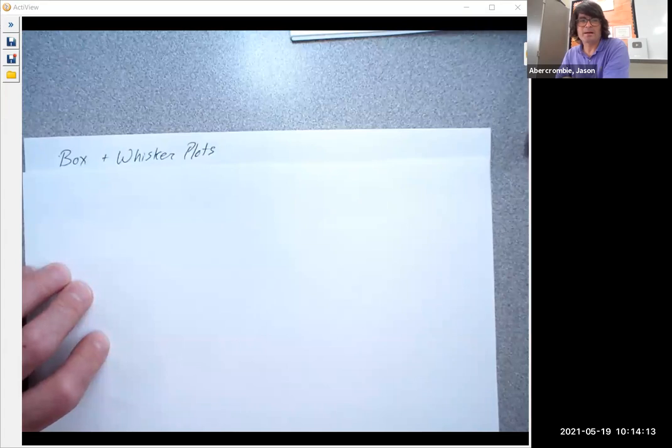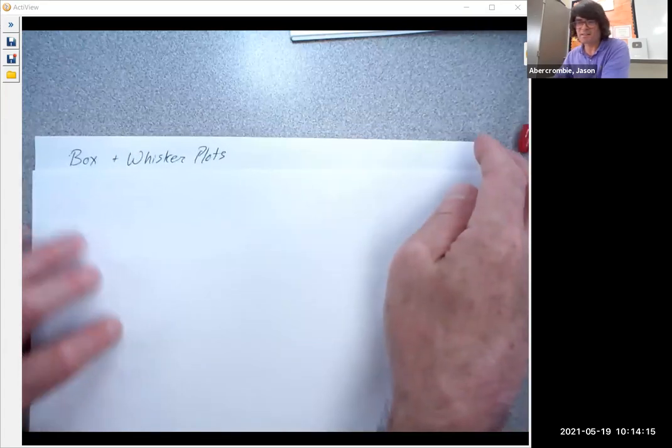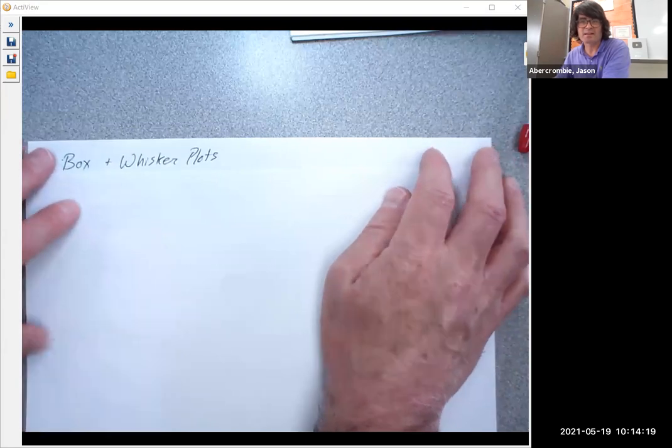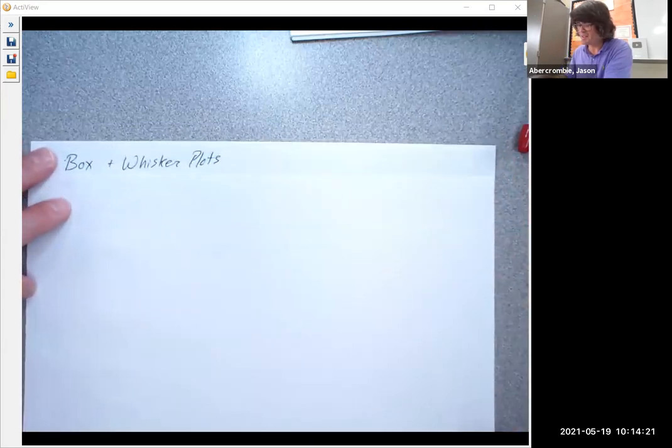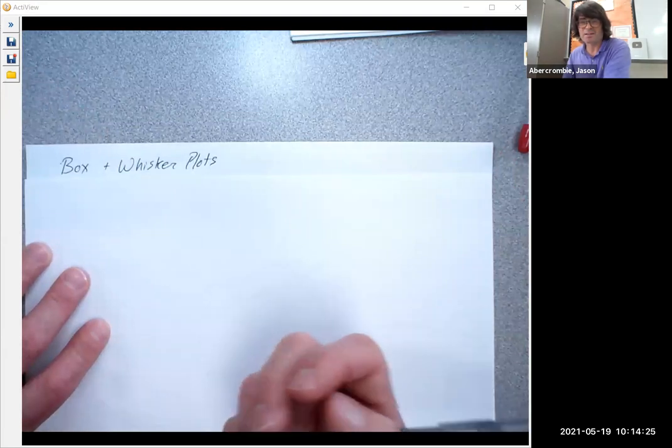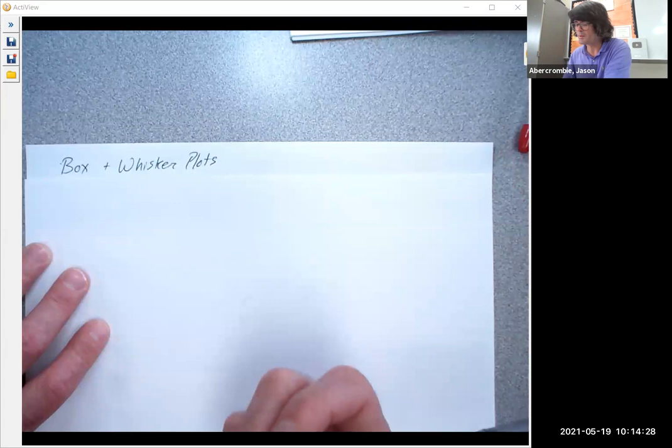Hi there. In this video, I want to talk about box and whisker plots. This is a diagram that is used to express a set of data. It can be a large set of data or small set, doesn't really matter. I want to first just conceptually show you what a box and whisker plot looks like and then we'll actually attempt one.